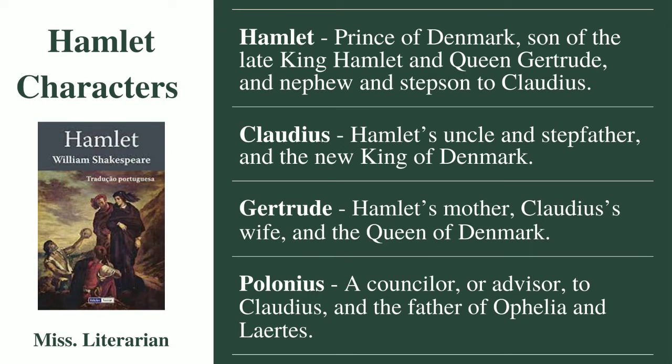Next is Claudius. He is the uncle and stepfather of Hamlet. He becomes the new king of Denmark after the death of Hamlet's father. Claudius is the brother of Hamlet's father; after he kills his brother, he married Gertrude. Next is Gertrude. She is the mother of Hamlet and becomes the wife of Claudius and the queen of Denmark. There are two female characters in this play: Gertrude and Ophelia. Next is Polonius. He is a counsellor to Claudius and the father of Ophelia and Laertes.